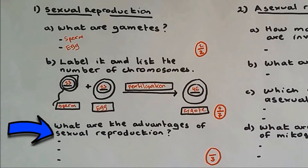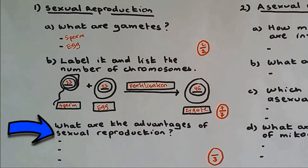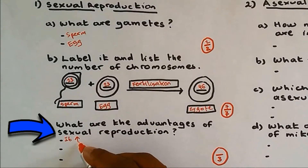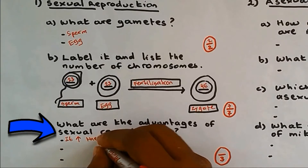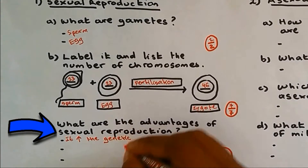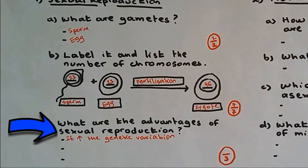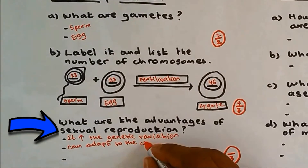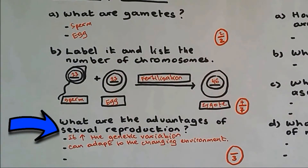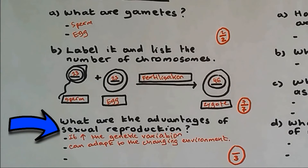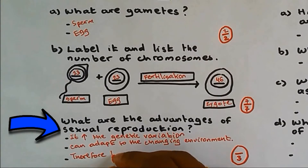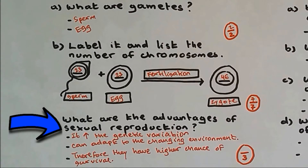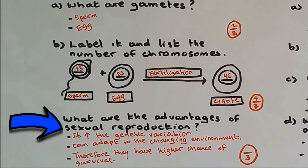What are the advantages of sexual reproduction? Sexual reproduction increases genetic variation, so the animals or organisms can adapt to the changing environment. Therefore, they have a high chance of survival. These animals which undergo sexual reproduction have less chance of extinction.